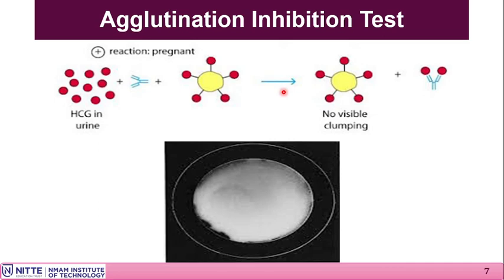Similarly, the same type of test can be done for viral antigens, where latex beads are coated with different types of viral antigens such as rubella virus antigen, mumps antigen, or potentially coronavirus antigen for coronavirus detection.